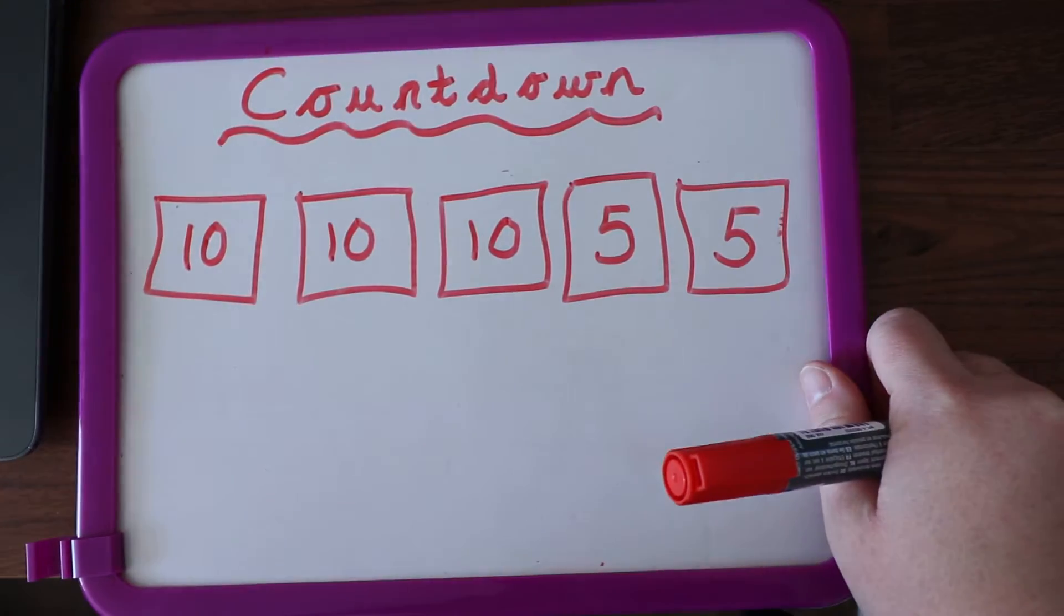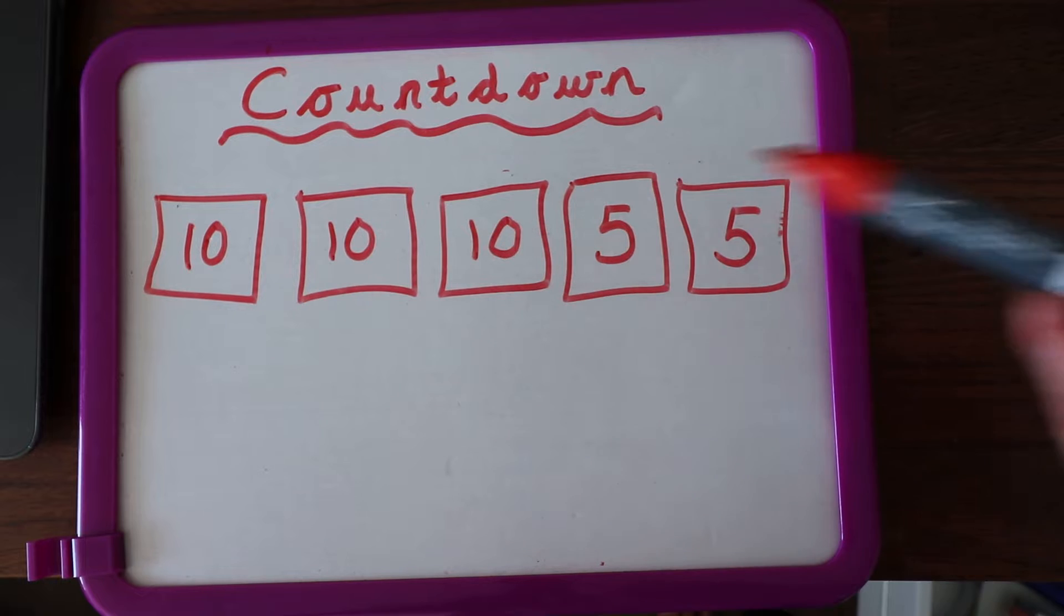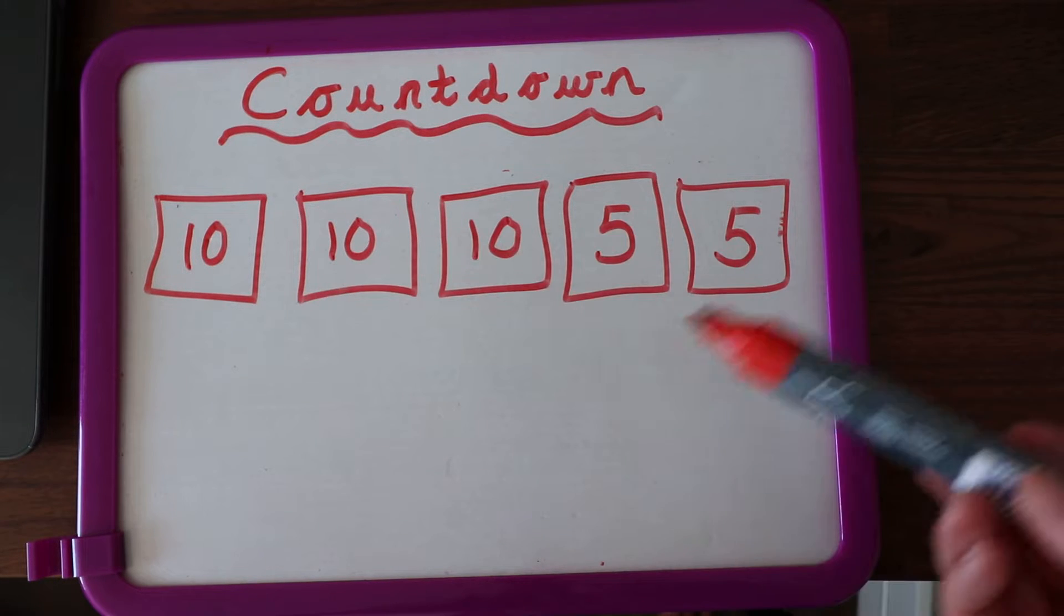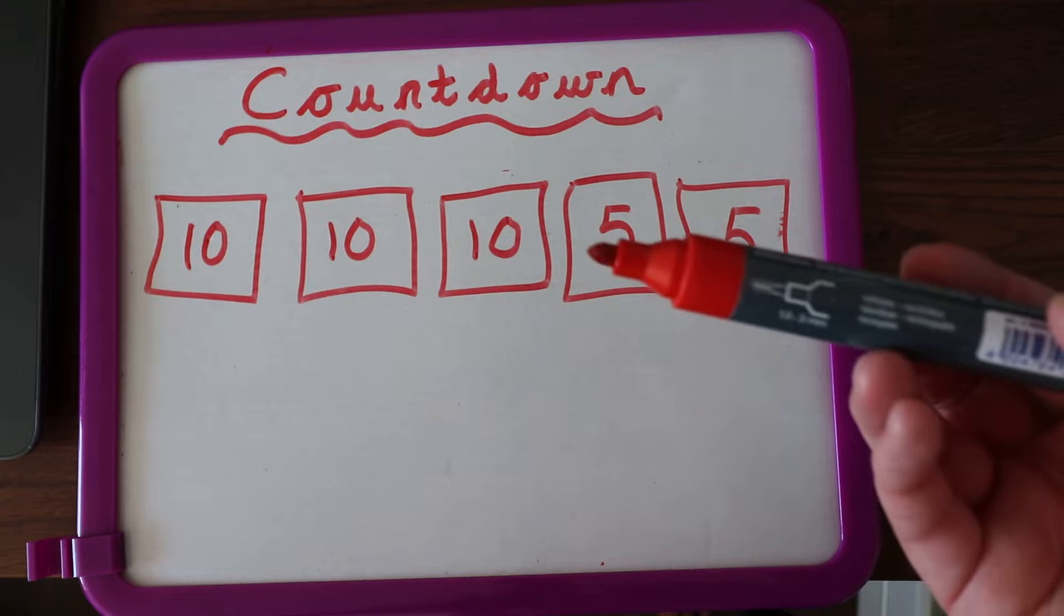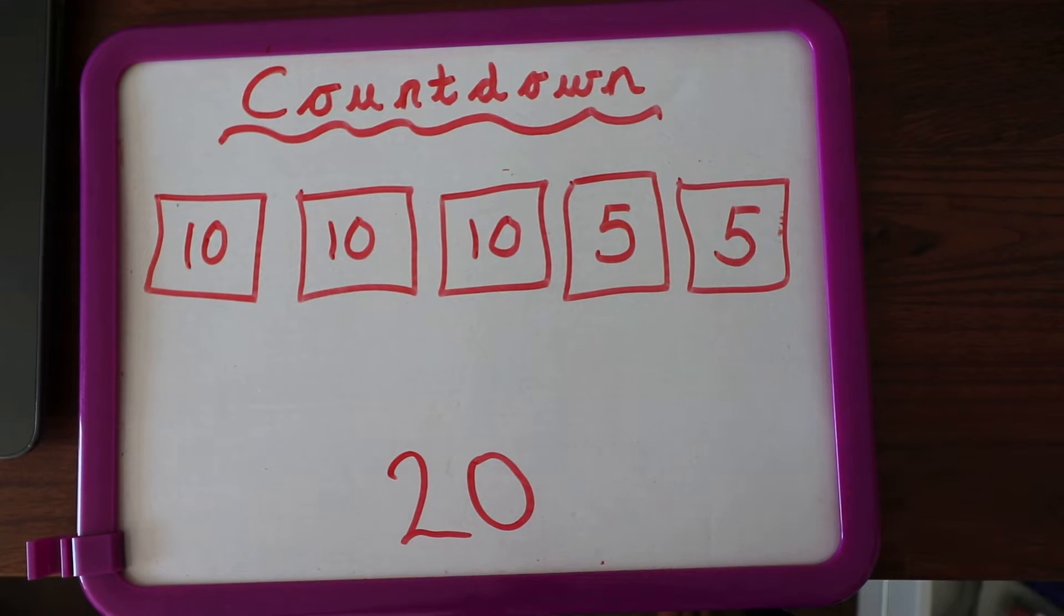Good morning everybody, it's Friday which means it's time for Countdown. You've got to use all of these numbers and you've got to make the number that I'm going to put here. You can use addition, subtraction, anything you want, but you've got to make the number 20. Okay, so off you go.